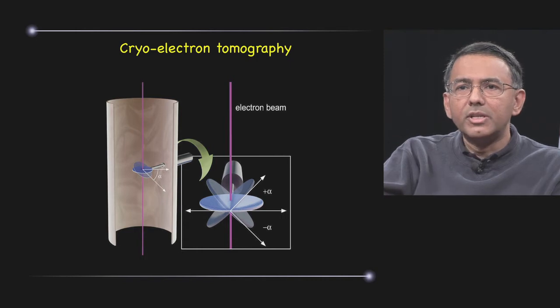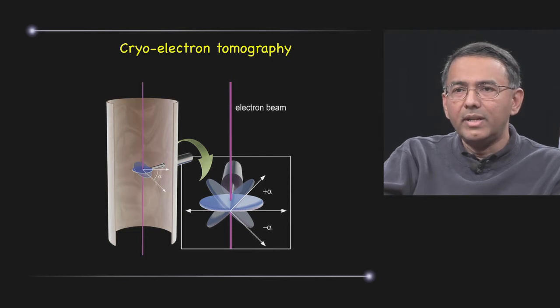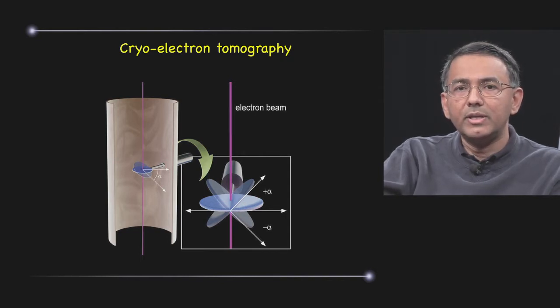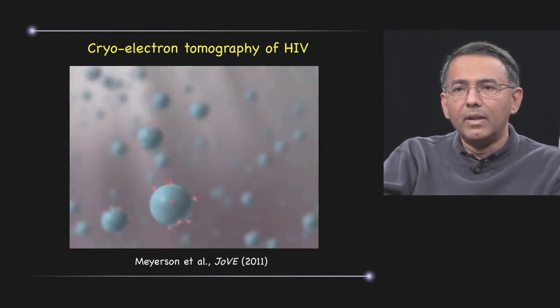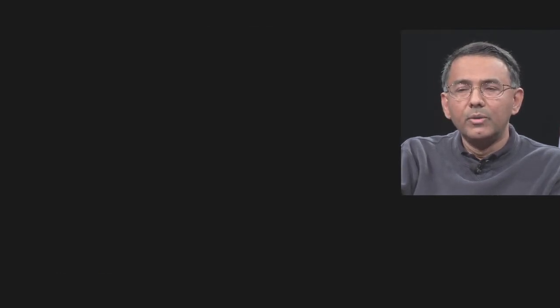The principle of imaging here is very similar to that used in computerized axial tomography. And the way we get the 3D information is to record a series of images of the same object over a wide range of angles by varying its orientation with respect to the incident electron beam. And computationally combining these images, we can then obtain a tomogram, which literally is a way to walk into the specimens of interest.